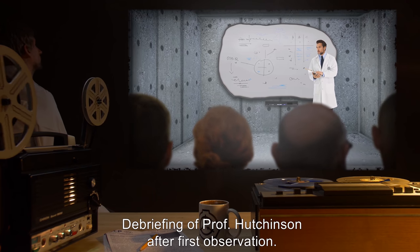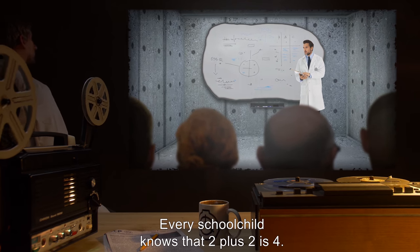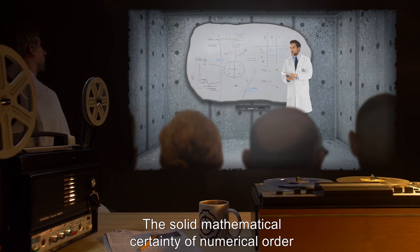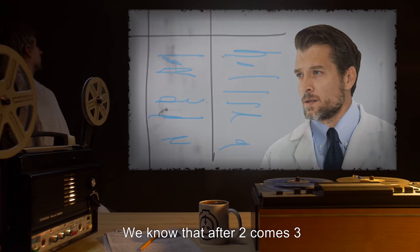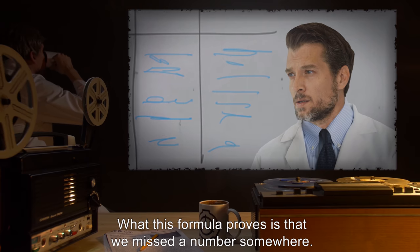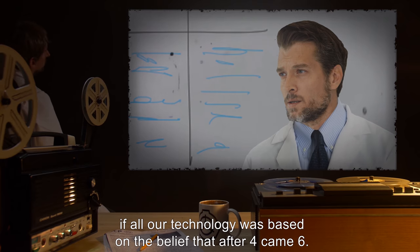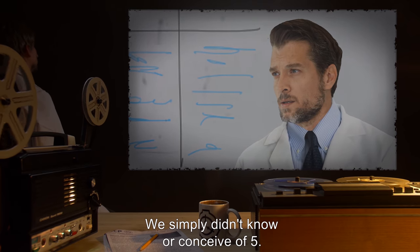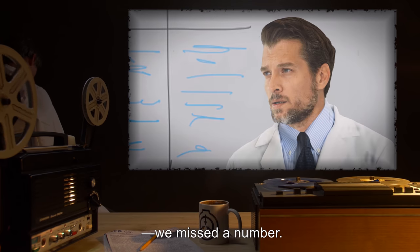Document 033-A. Debriefing of Professor Hutchinson after first observation. Professor Hutchinson: Every schoolchild knows that 2 plus 2 is 4. The solid mathematical certainty of numerical order and value is the basis for all logic-based systems. We know that after 2 comes 3, and after 3 comes 4. What this formula proves is that we missed a number somewhere. Imagine, if all our technology was based on the belief that after 4 came 6, we simply didn't know or conceive of 5. That is, in essence, what this formula proves. We missed a number.